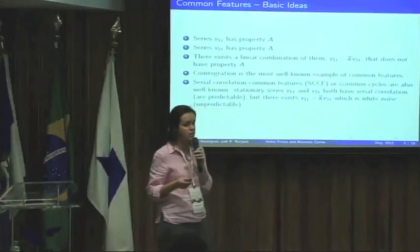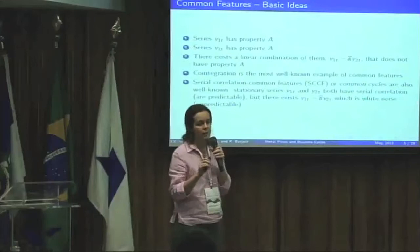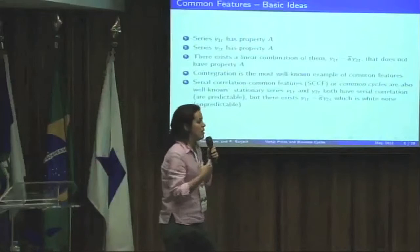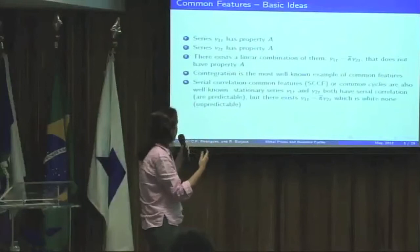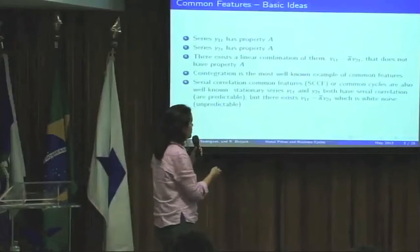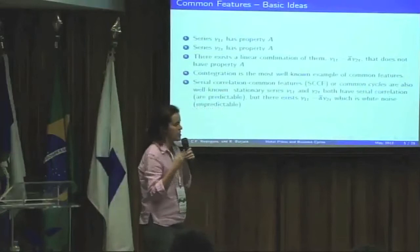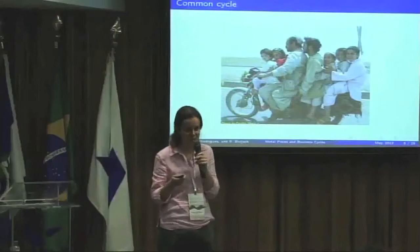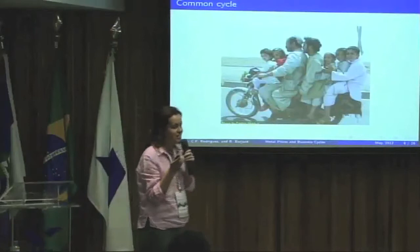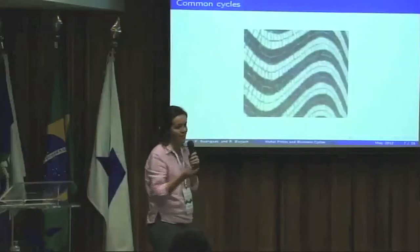Common cycles are related to stationary series: individually they depend on past information, but if they share that past information we can build a linear combination that is totally unpredictable. Engle and Kozic in 1993 started with this concept, studying US and Canadian GDP—finding no co-integration but finding that their growth rates were synchronized. Here we start with common features between six metal prices and industrial production.